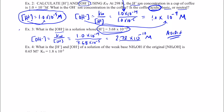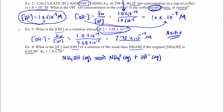Now, what if we have a weak base? I want to find the hydrogen ion concentration and the hydroxide ion concentration if I have the weak base NH₄OH. The original concentration is 0.65 moles per liter. The reaction is NH₄OH (aq) forming NH₄⁺ ions and hydroxide ions in water. The Kb for that — the equilibrium constant for this weak base — is 1.8 times 10 to the negative 5th. We want to find the hydroxide concentration at equilibrium.